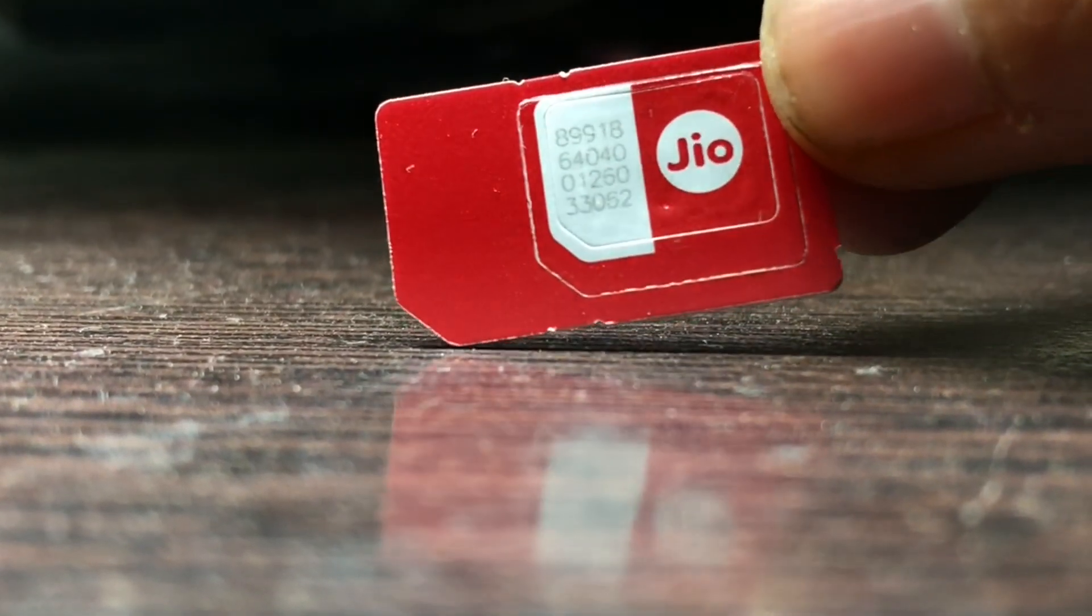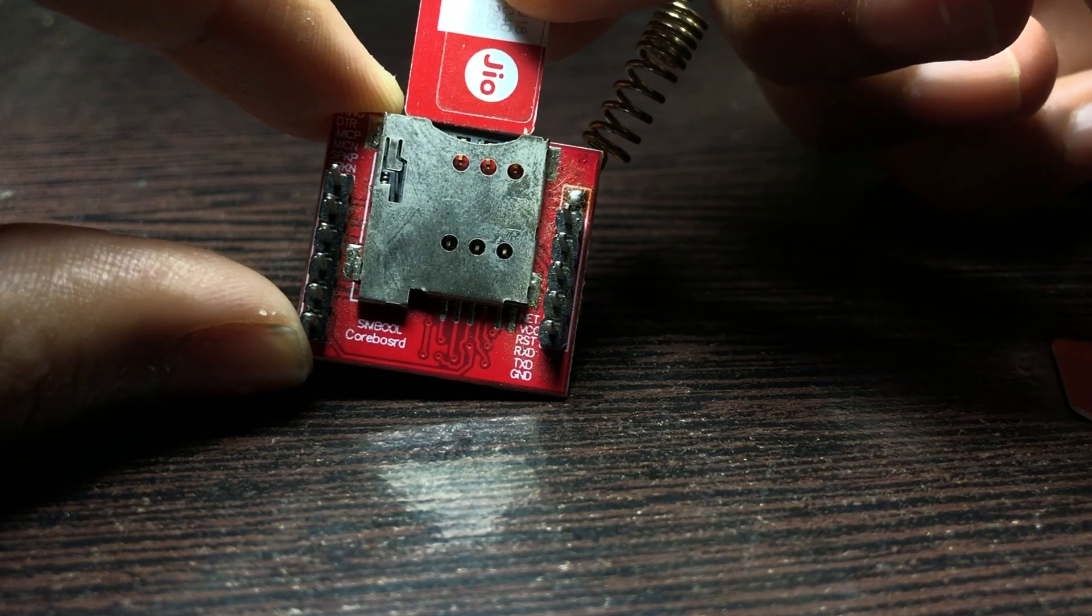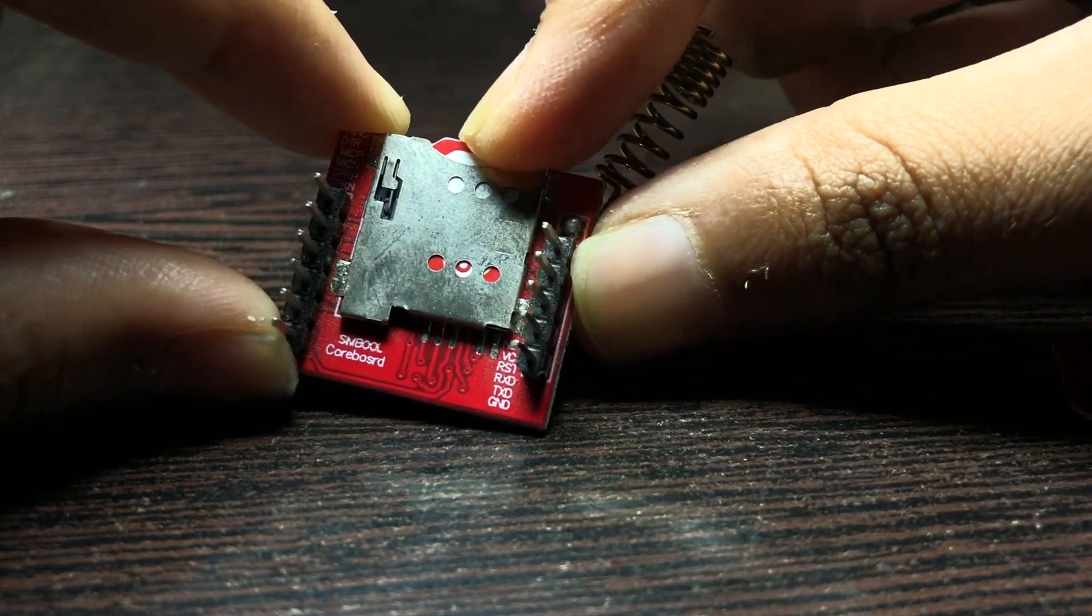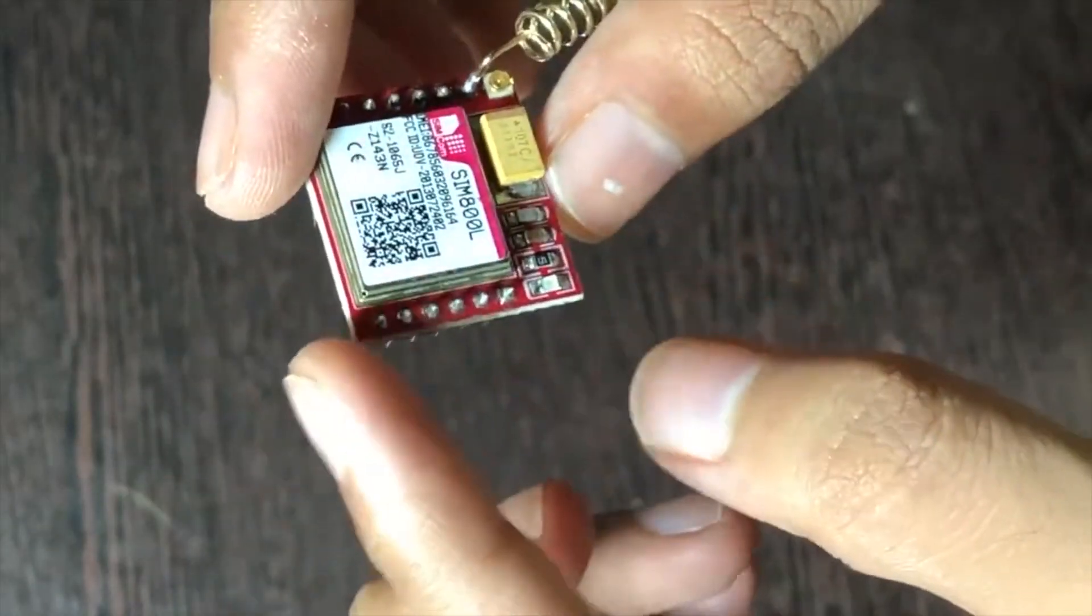It is a 4G SIM card but it works with the 2G module. I'll insert the SIM card into the tray - there's a satisfying click sound. You have to solder all the header pins.